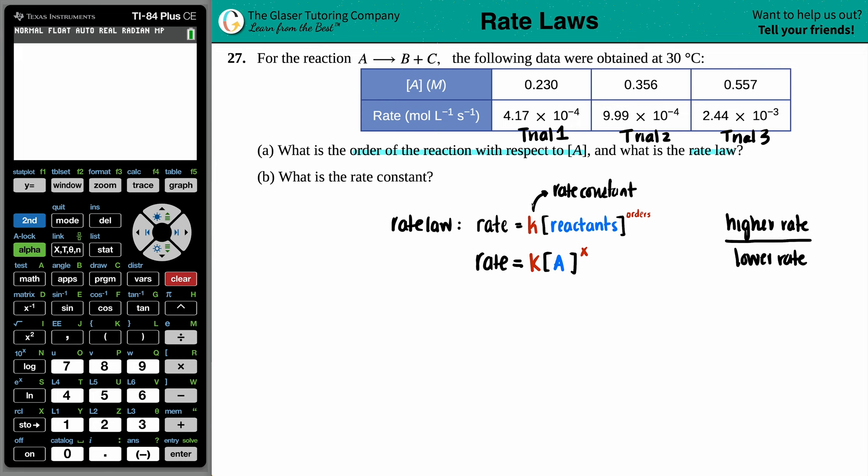Now we have to pick two trials to find out what the orders are, because basically what we're going to do is we're going to make a ratio out of this formula. Now to make it easy for yourself, we're always going to choose the higher rate value divided by the lower rate value. In this case, it does not matter what trials we pick, just as long as you have the higher one divided by the lower rate. And the rate values are these. So it does not matter. If you want to choose trial two over trial one, because this value 9.99 is higher than 4.17, you could do that.